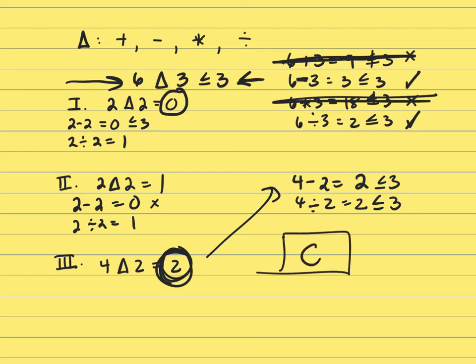Just want to review one more time. In Roman numeral 1, you had to get 0, and you got a 0 and a 1. Roman numeral 2, you had to get a 1, you got a 0 and a 1, it didn't work. But it did work for Roman numeral 3.